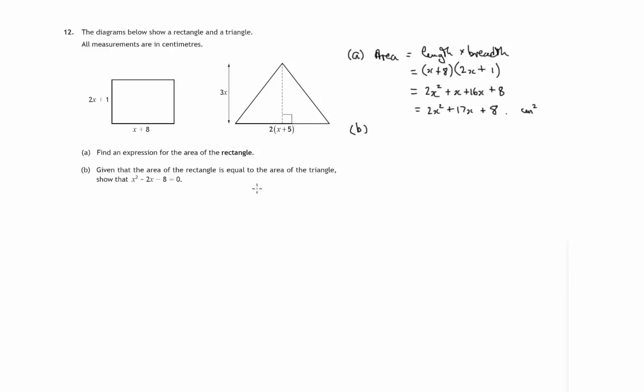Given that the area of the rectangle is equal to the area of the triangle, we have to show that this quadratic equation is true. So let's work out the area of the triangle. Well that's a half base times the height.